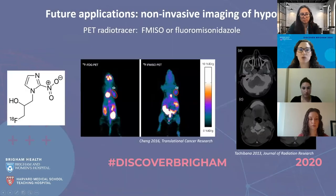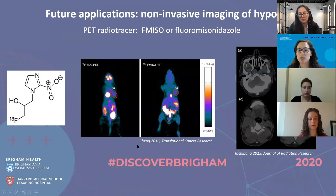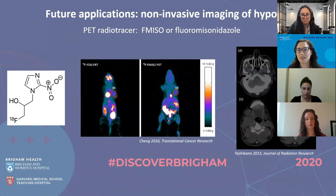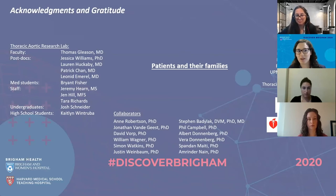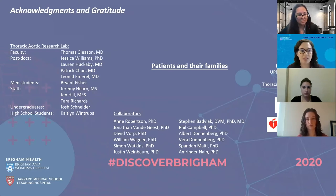This is very promising. In the future, what we want to do is use another compound — a PET radiotracer called F-MISO, which is currently used in cancer to detect hypoxic areas. We hope that we can use this PET radiotracer to detect hypoxia non-invasively in human aortic aneurysm. I want to finish by acknowledging the people involved in the work and expressing our gratitude to patients and their families for giving us their tissue for research. Thank you very much.